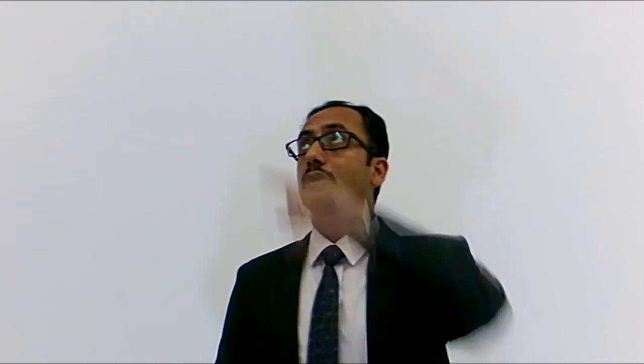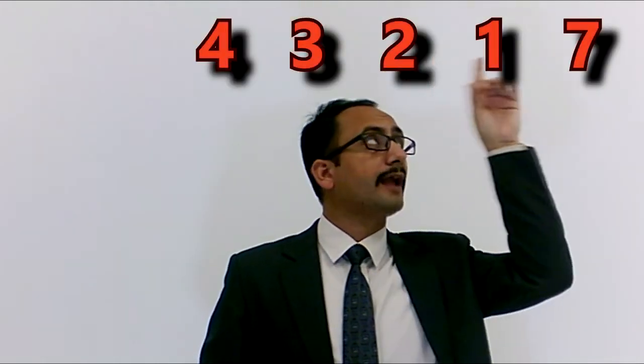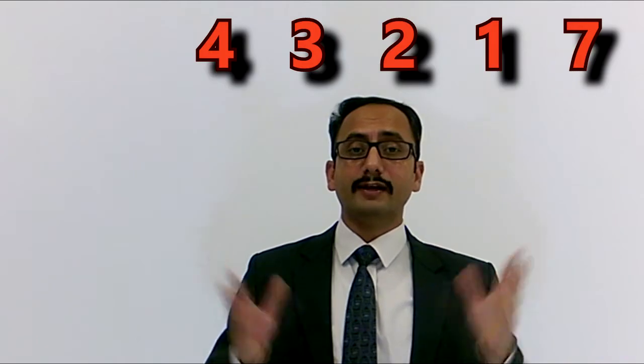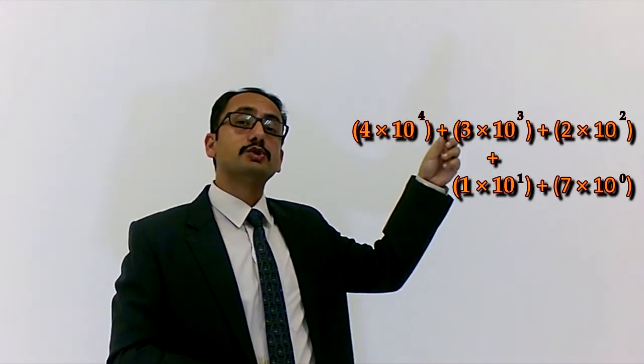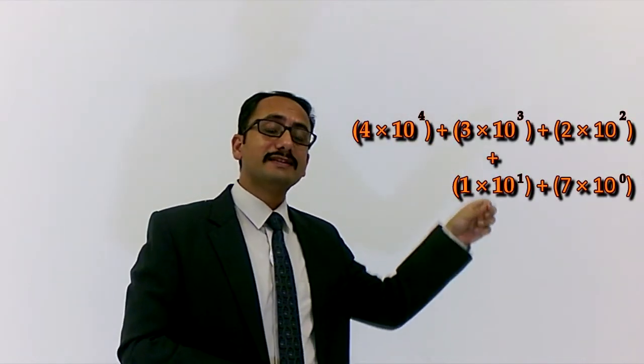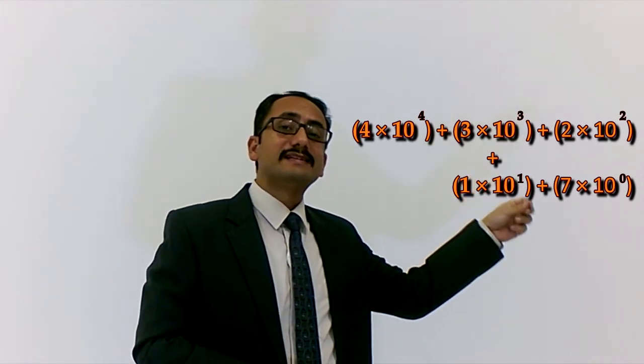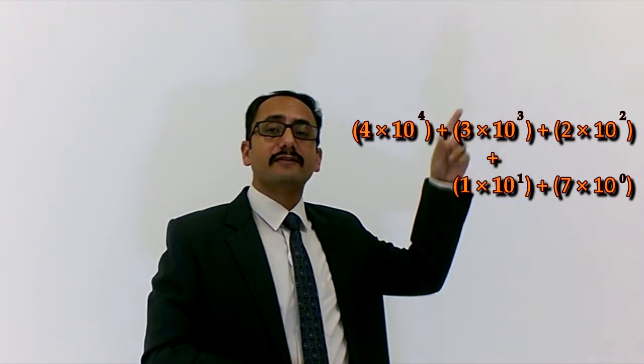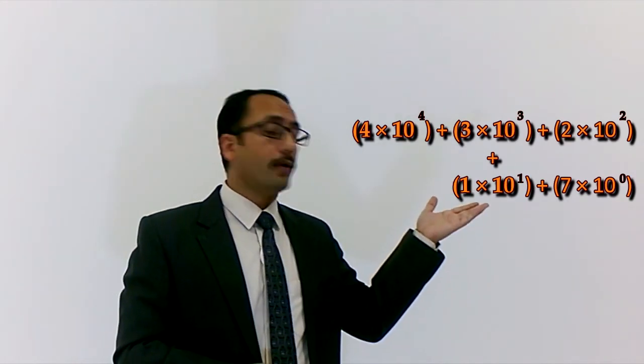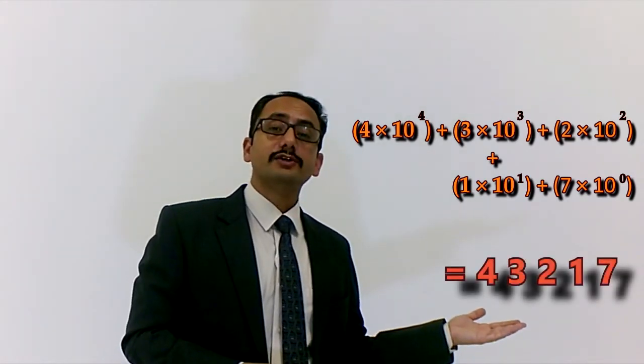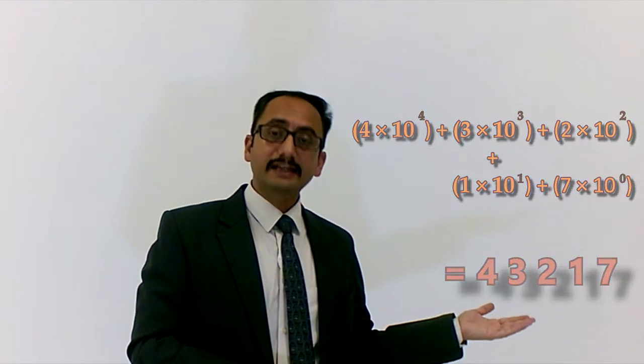Now let us consider an even bigger number: 43,217. This number will also be expressed in the same way — 4 times 10 raised to the power 4, plus 3 times 10 raised to the power 3, plus 2 times 10 squared, plus 1 times 10, plus 7 times 10 raised to the power 0. And this is the expanded form of 43,217. This is how we express different numbers in the base 10 numeral system.